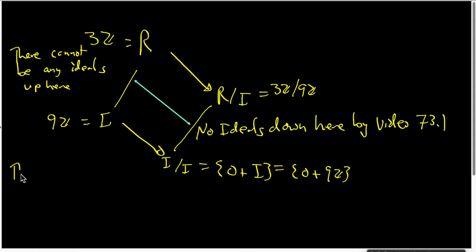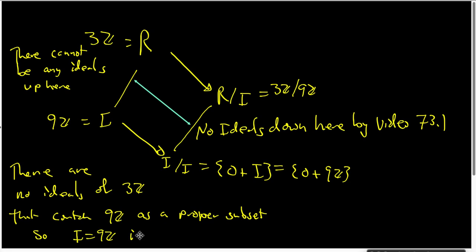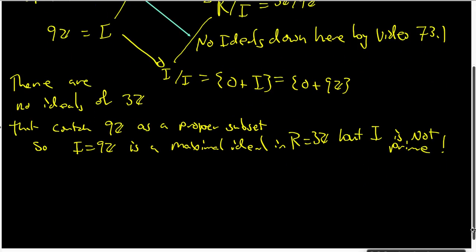What that says is that there are no ideals of 3Z that contain 9Z as a proper subset. And that says our ideal I, which is 9Z, is a maximal ideal in the ring R, which is 3Z. But as we've already seen, I is not prime. So there are maximal ideals that are not prime ideals. So maximal ideal does not necessarily imply prime ideal.